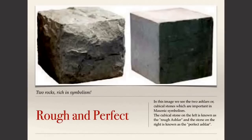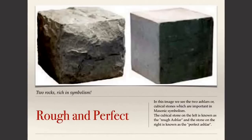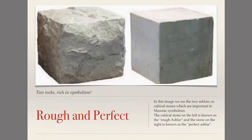What you'll see here in this image, there are two rocks, basically. One is rough, taken from a quarry pretty much in its original form. And the stone to your right is what is known in Freemasonry as the perfect Ashlar. So the one on your left is the rough Ashlar, the one on your right the perfect Ashlar in Freemasonry terms.